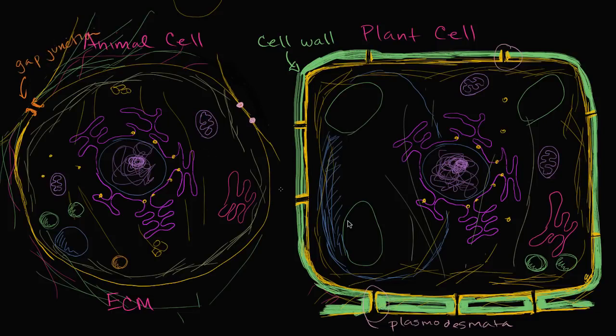Now, plasmodesmata are much more common to a much wider category of plant cells than gap junctions. But gap junctions can be very relevant in certain types of animal cells, in particular things like heart cells, where because of gap junctions between adjacent cells, electrical signals can move through the tissue and let adjacent cells know, hey, it's time to contract in the right way. So this is still very crucial for certain types of animal cells.